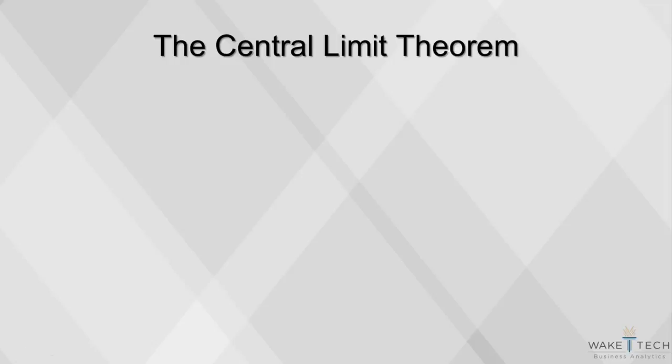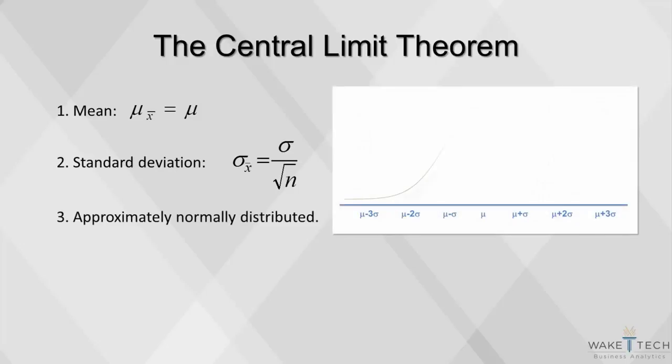If all possible random samples, each of size n, are taken from any population with a mean mu and a standard deviation sigma, the sampling distribution of the sample means, or averages, will have a mean, have a standard deviation, and be approximately normally distributed, regardless of the shape of the parent population.